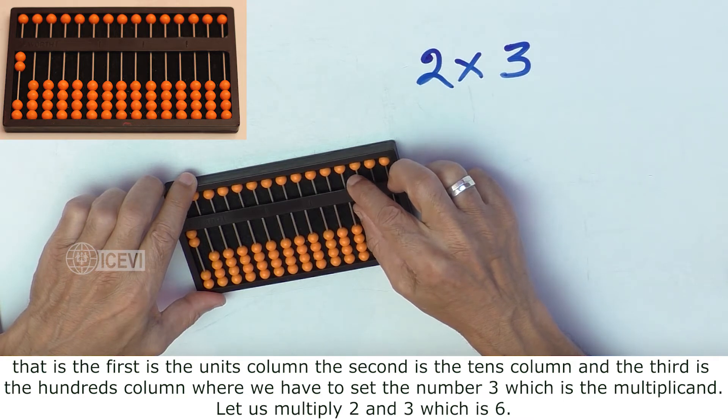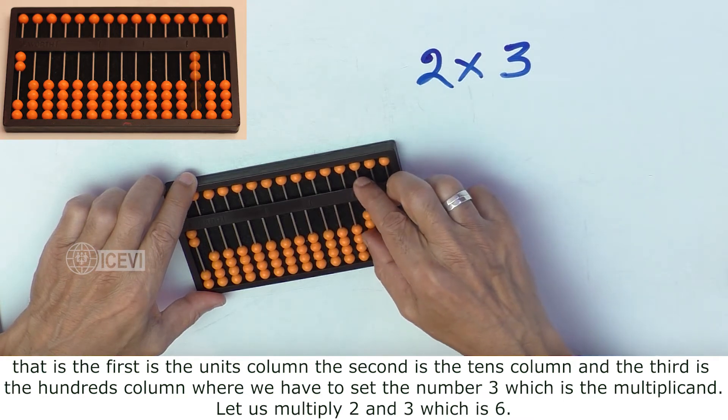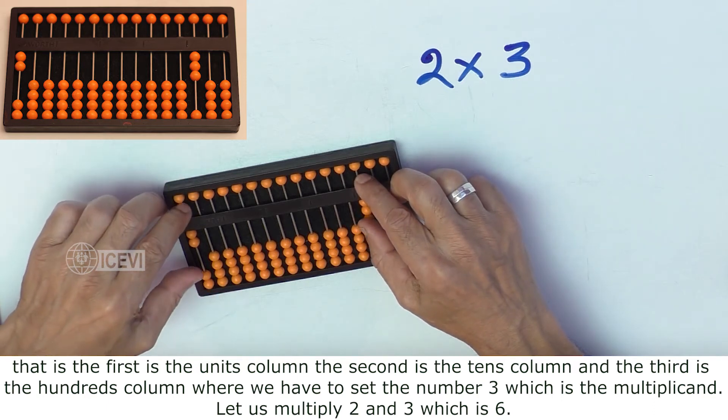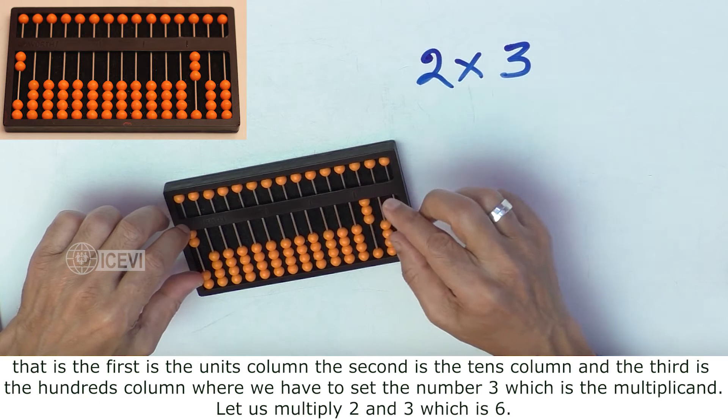Where we have to set the number 3, which is the multiplicand. Let us multiply 2 and 3, which is 6.